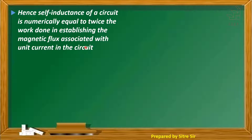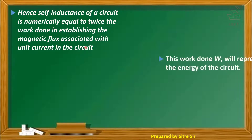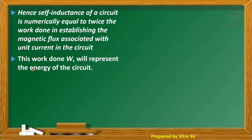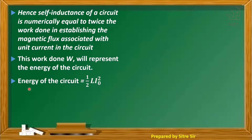This work done W represents the energy of the circuit. This work done is stored in the circuit, and it is equal to one-half L into I₀ squared.